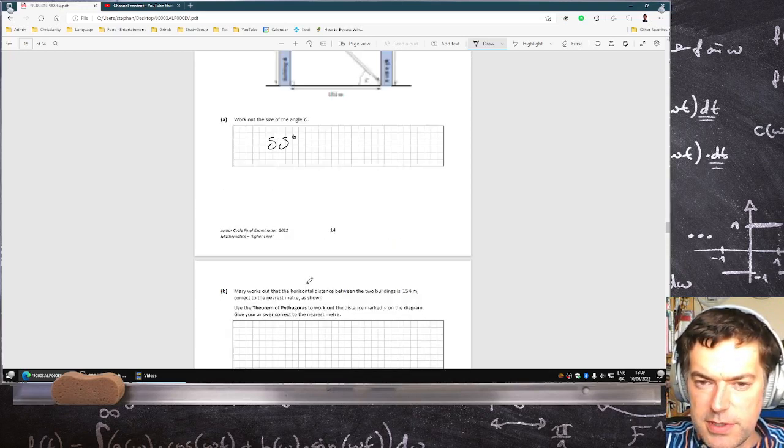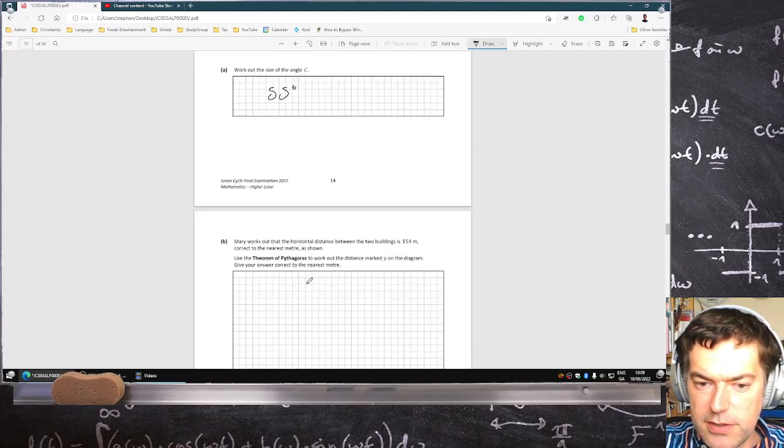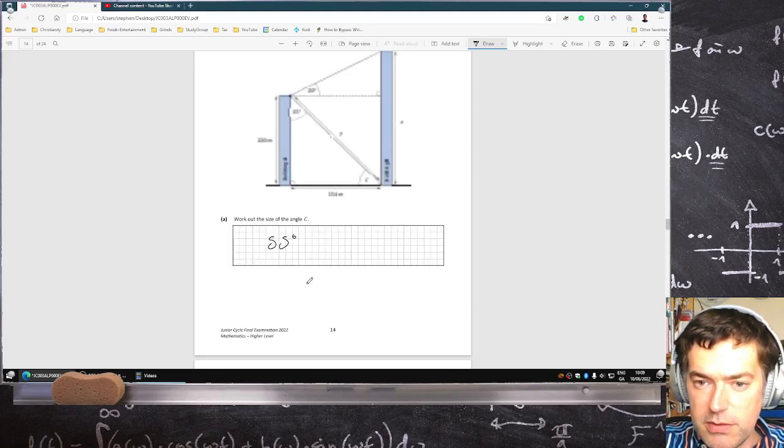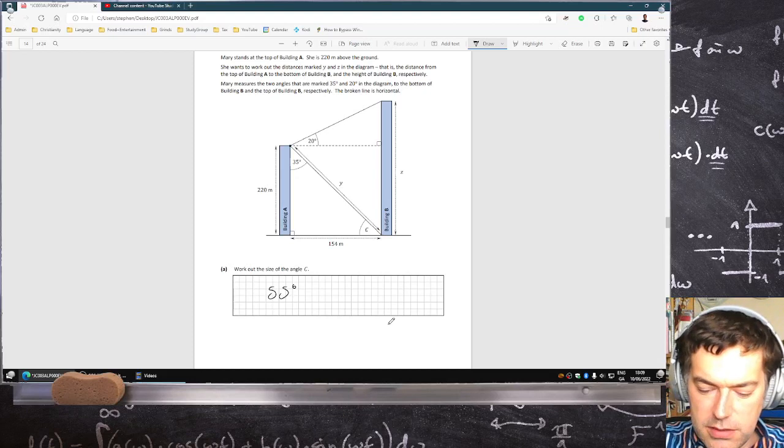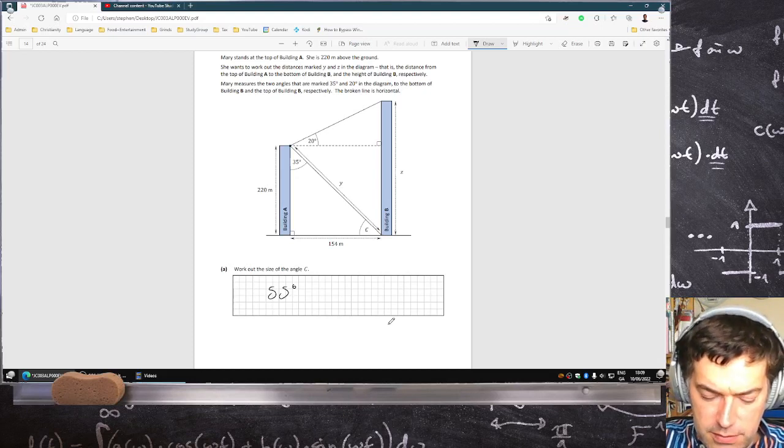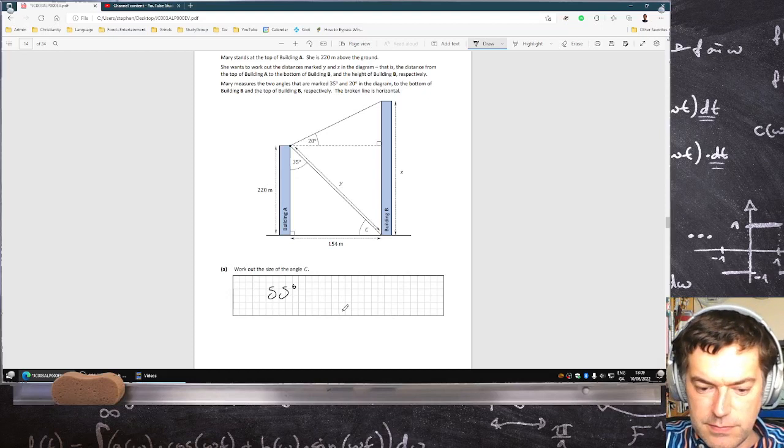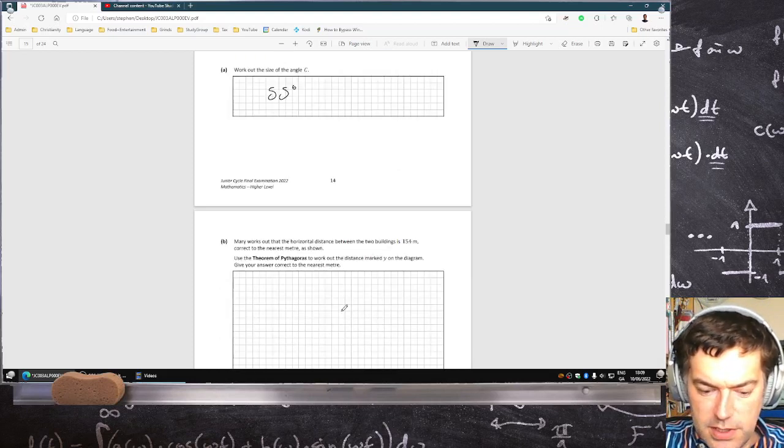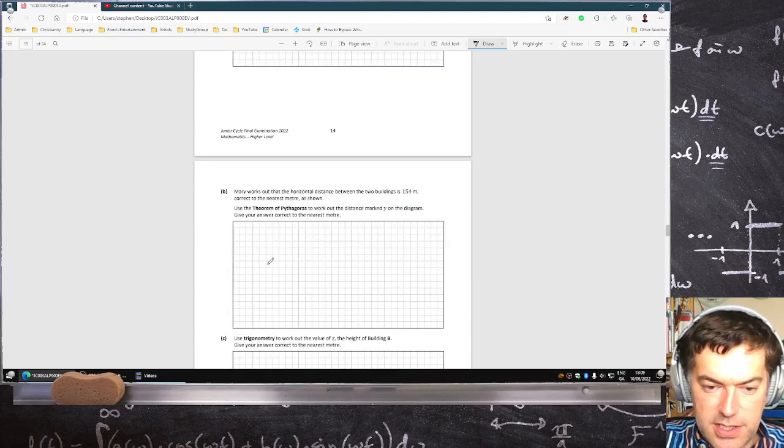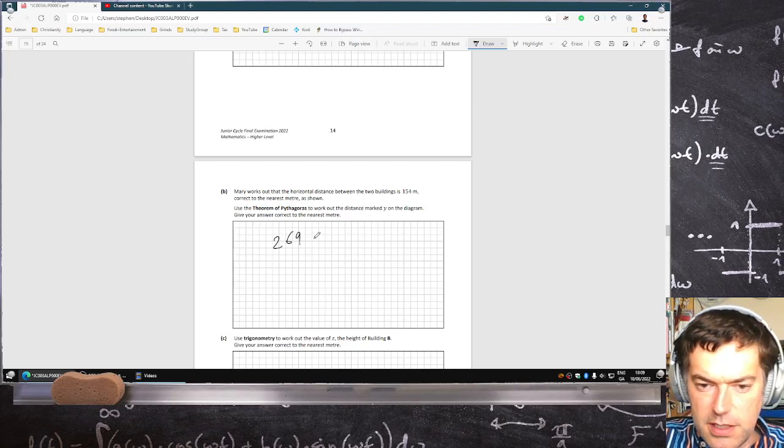Mary works out the horizontal distance between two buildings, 154, which is on the diagram. Use Pythagoras, work out Y. Square root 220 squared plus 154 squared to the nearest meter, 269 meters.